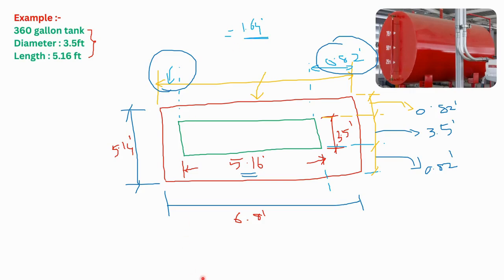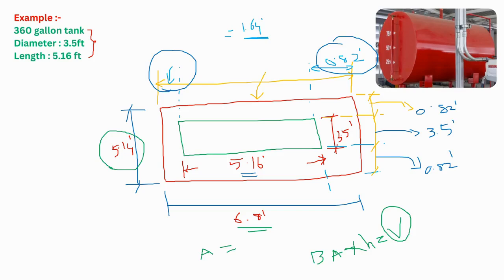Our aim now is to calculate the bund wall area and also the height of this bund wall. We will multiply the bund wall area by height to get the volume. The area of the bund wall will be 6.8 feet multiplied by 5.14 feet, which comes around 34.95 square feet.